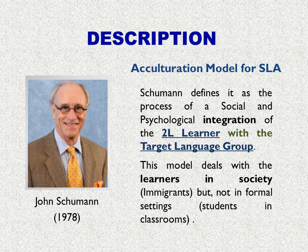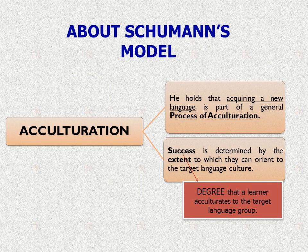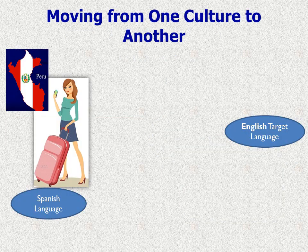It means immigrants, but not in formal settings — it means students in classrooms. Schumann holds that acquiring a new language is part of a general process of acculturation. Success is determined by the extent to which learners can orient to the target language culture — that is, the degree that the learner acculturates to the target language group. So acculturation means moving from one culture to another.